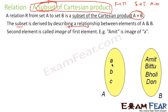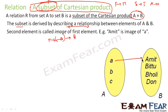Here we have set A with elements a, b, and c, and set B with elements amid, bit2, boli, and don. The relation is: the first letter of the element in B should match the element in A. So a maps to amid, b maps to bit2, b maps to boli, and c does not map to don since c is not a first letter in B.